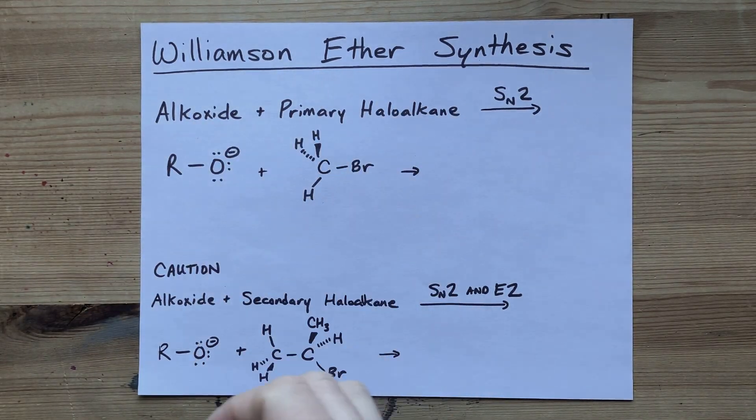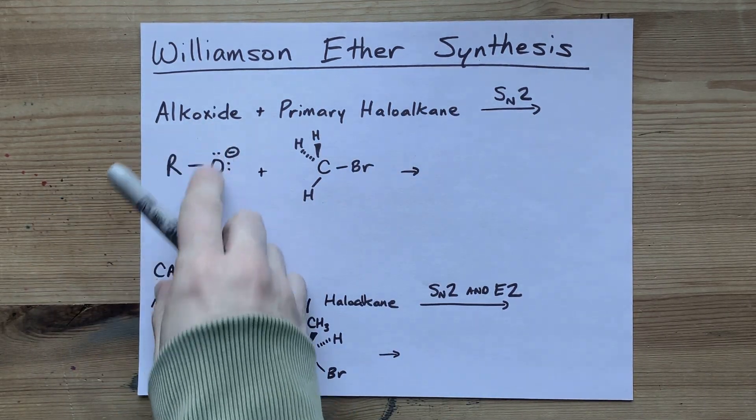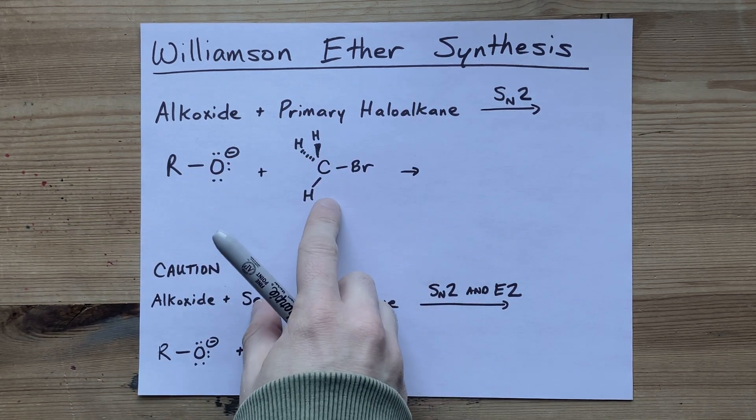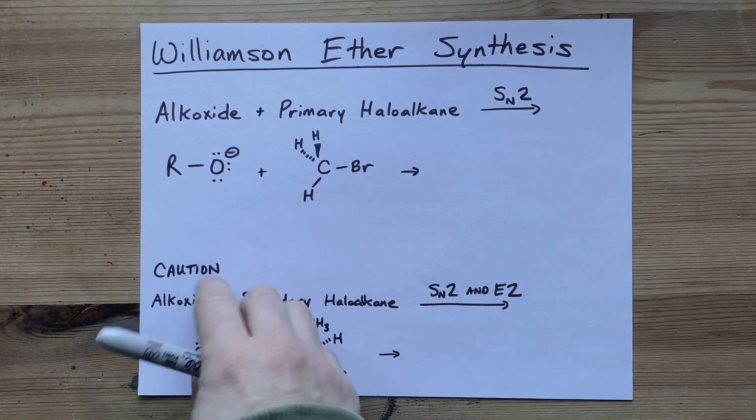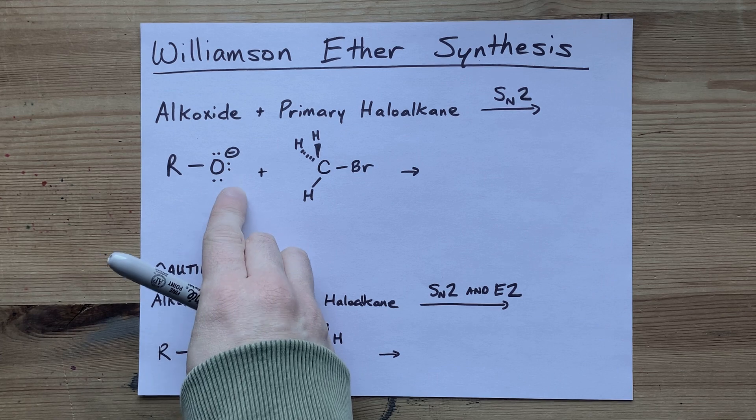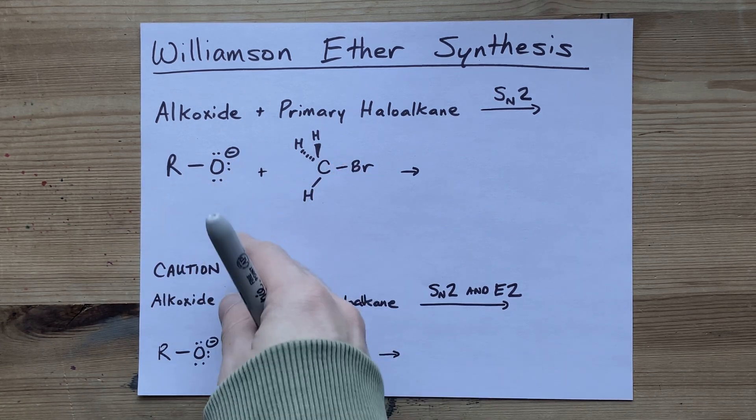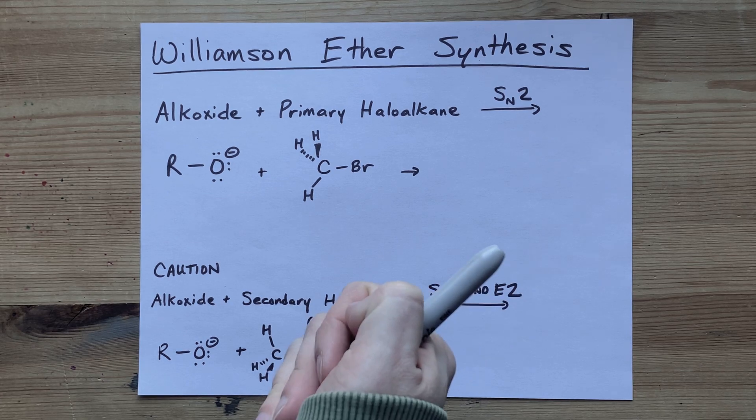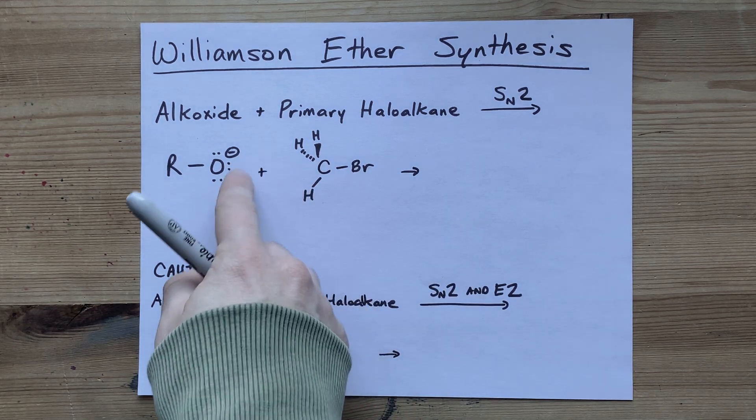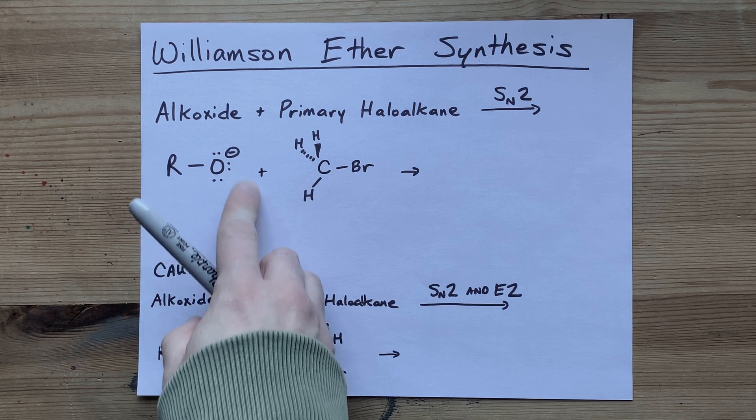The Williamson ether synthesis is reacting an alkoxide with a primary haloalkane. What I mean is this is an alcohol that has been deprotonated. Perhaps you had the pure alcohol and you mixed some sodium metal into it so that the sodium reacted with it.